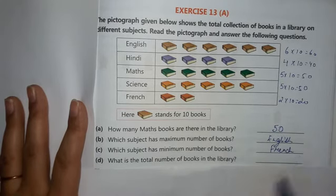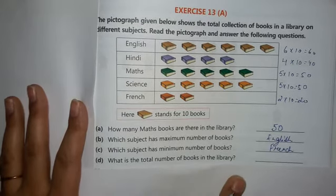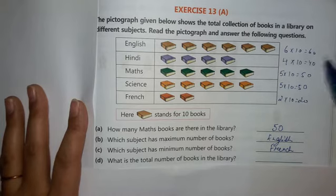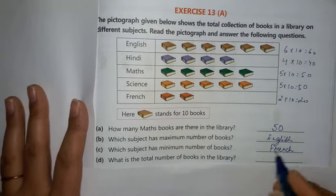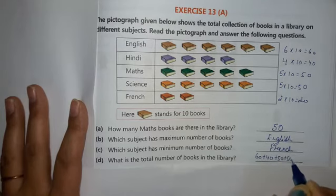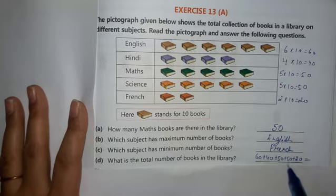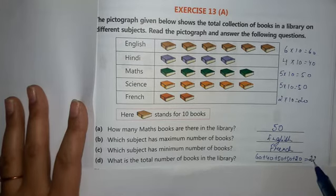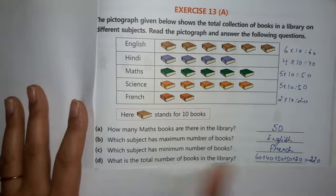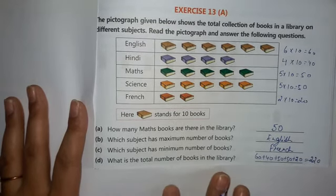And in the last, what is the total number of books in the library? Total number of books means you have to add all these numbers: sixty plus forty plus fifty plus fifty plus twenty equals... sixty plus forty is one hundred, one hundred plus fifty is one fifty, one fifty plus fifty is two hundred, two hundred plus twenty equals two twenty. That means there are two hundred twenty total number of books in the library.